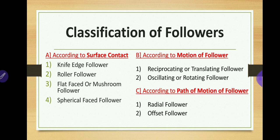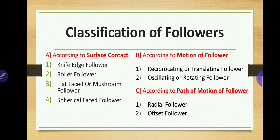The cam usually rotates at uniform speed, but the follower motion is predetermined and depends on the shape of the cam — as the shape changes, the follower motion changes. According to surface contact there are four types: knife edge follower, roller follower, flat faced or mushroom follower, and spherical faced follower. According to the motion of follower there are two types: reciprocating or oscillating. According to the path of motion there are two types: radial follower and offset follower.